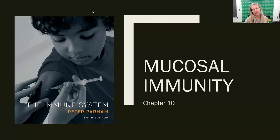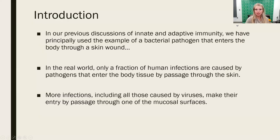Chapter 10 is all about immunity in the mucosal tissues — we call it mucosal immunity. It covers all the differences we see in tissues associated with mucosal surfaces. There's not a lot of differences in the specifics; our T cells and B cells have developed, matured, and gone through their selective processes. Activation can look a little different, but overall the system is the same.